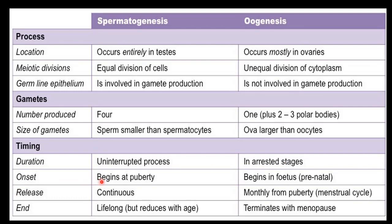Spermatogenesis begins at puberty. But the oogenesis process is prenatal — that is, when the girl child is in the mother's uterus, oogonia are already formed, beginning in the fetus. Spermatogenesis production is continuous and uninterrupted, and release is also continuous. But in oogenesis, one ovum is released at every menstrual cycle — that is, once a month, monthly from puberty to menopause.